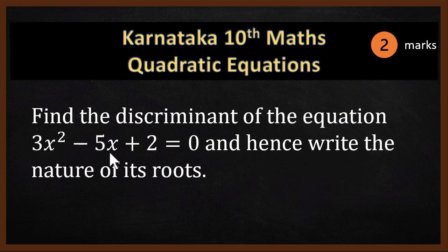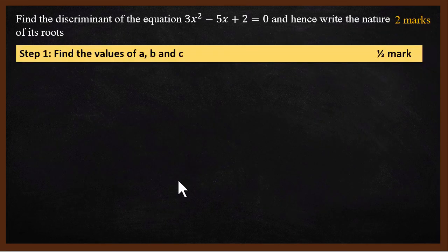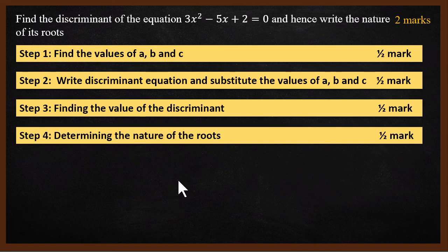The equation is 3x² minus 5x plus 2 equals zero. We need to find the discriminant and use it to determine the nature of the roots. To solve this problem, there are 4 steps, and each of those steps carries half a mark.